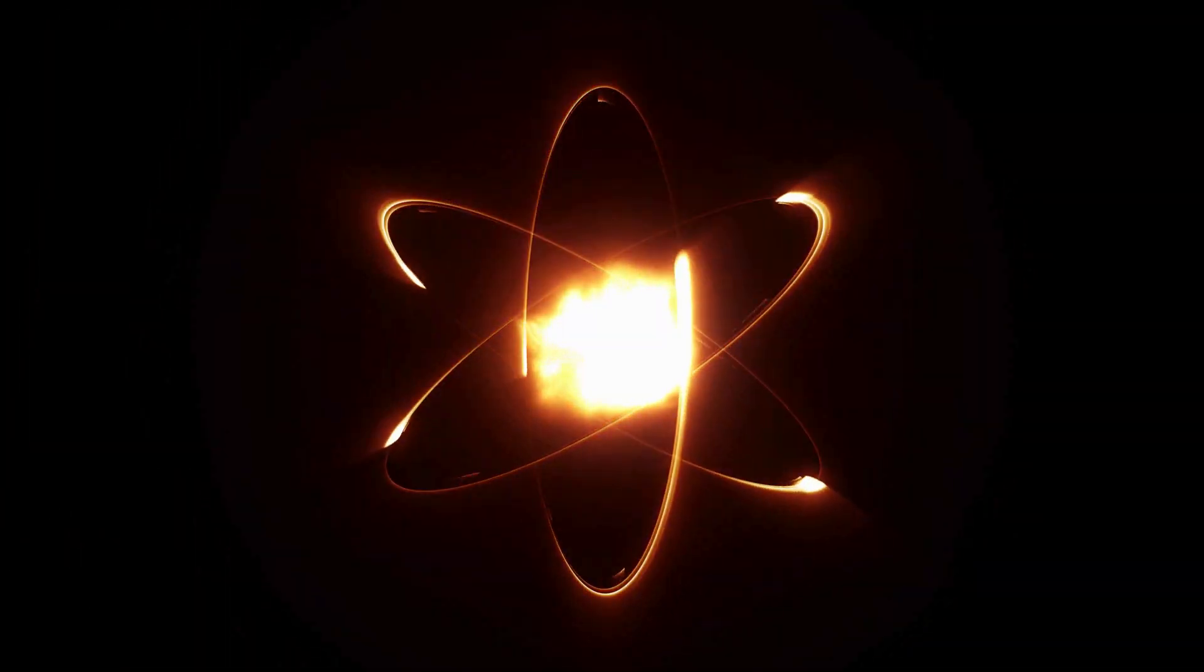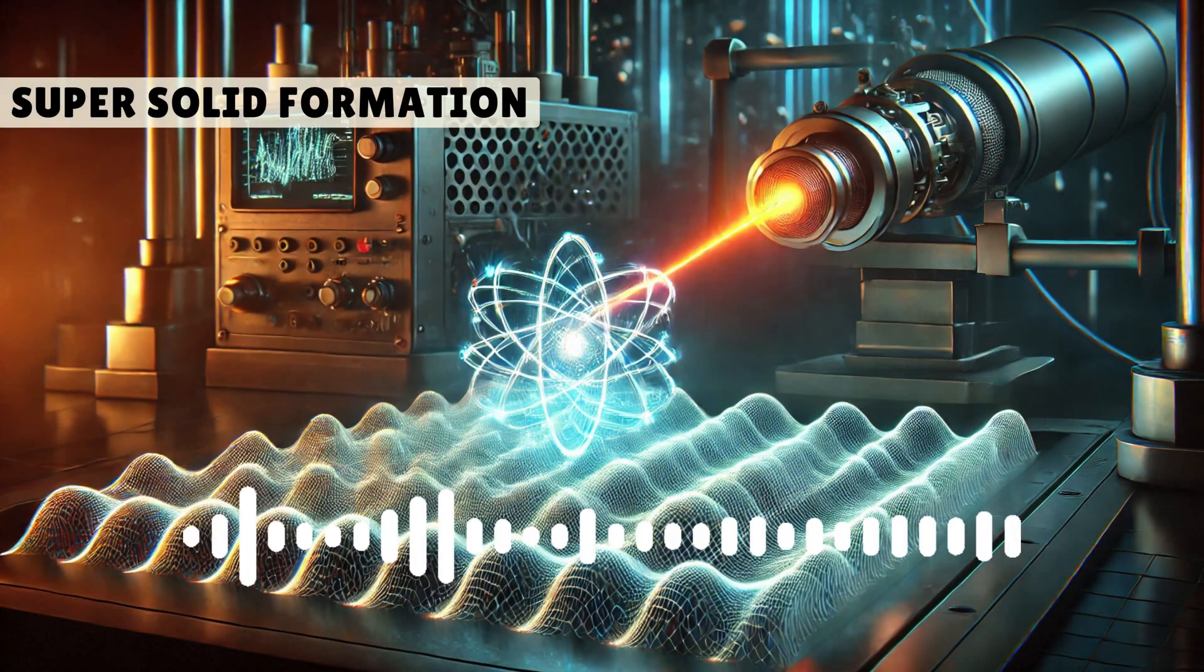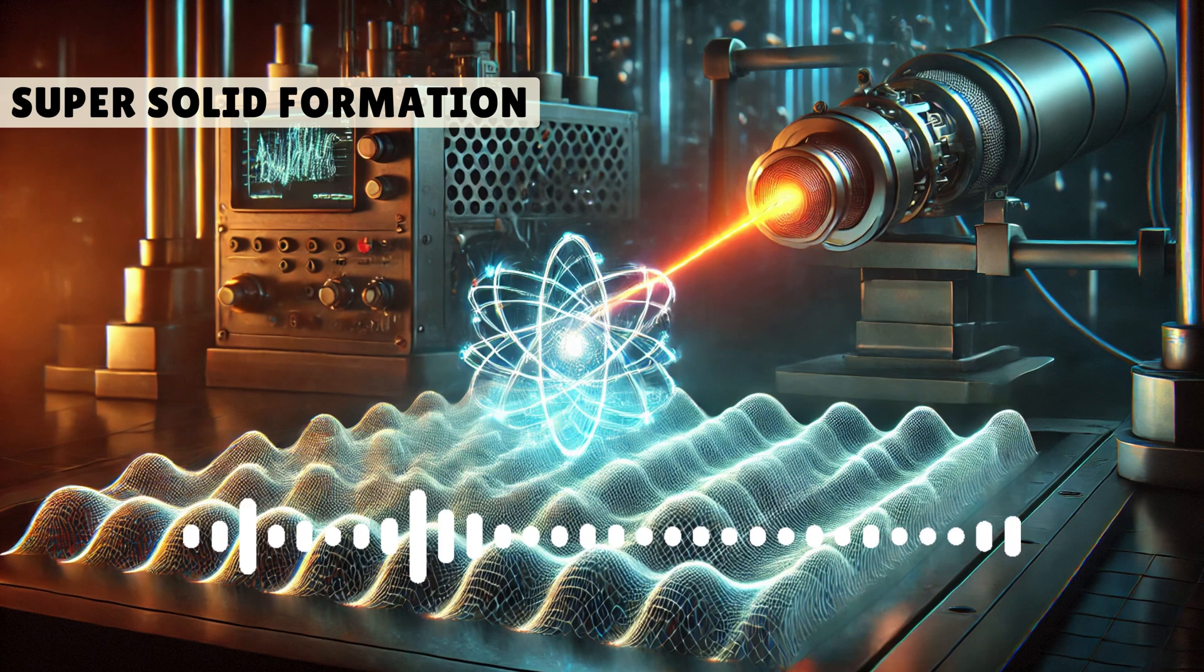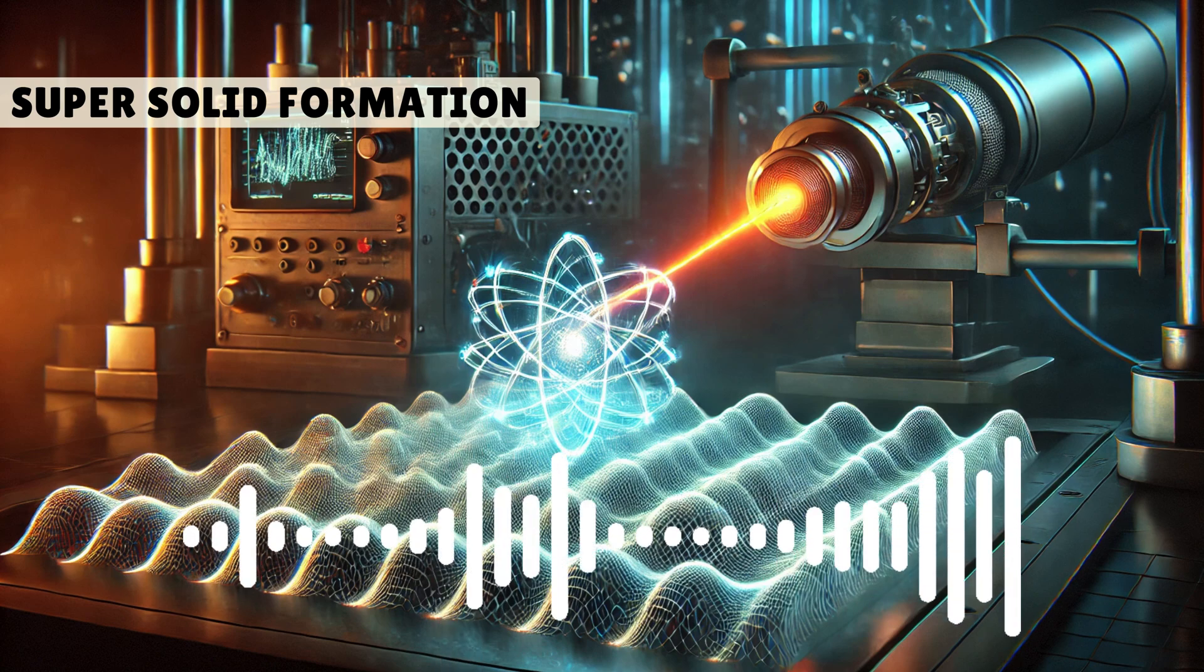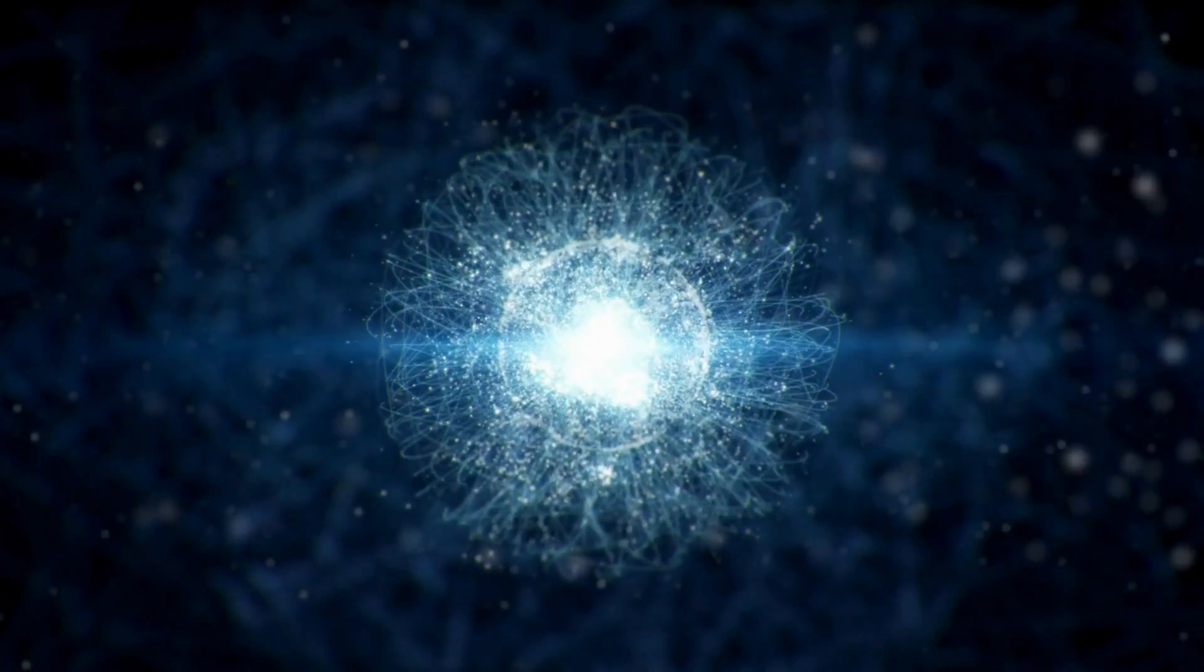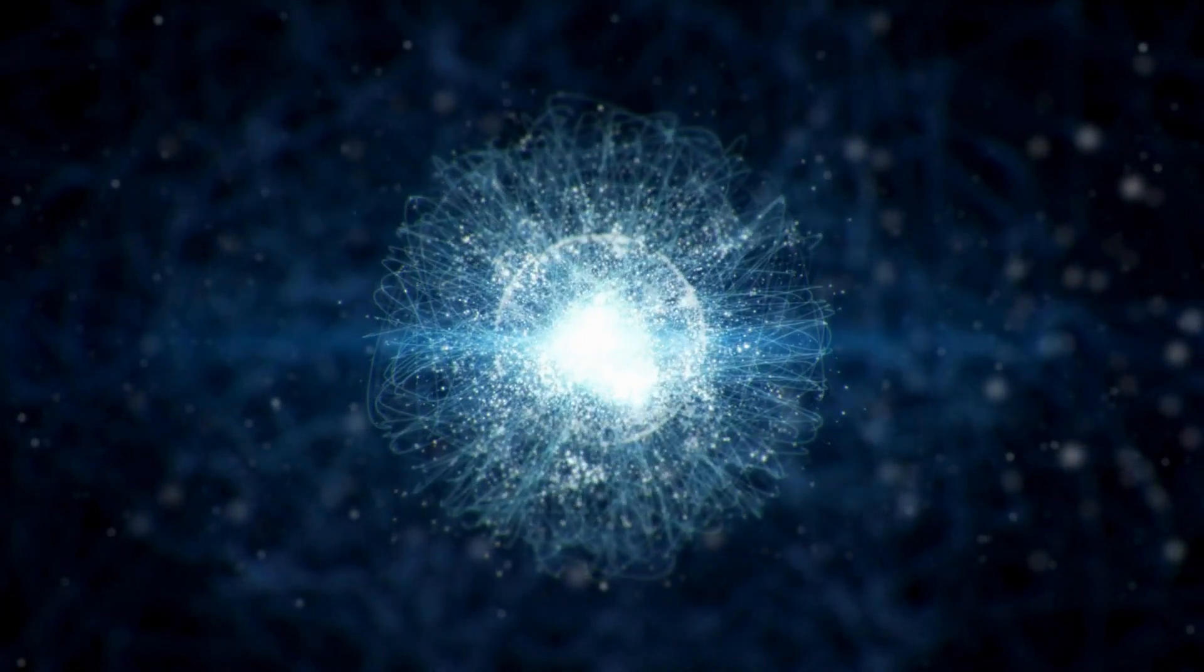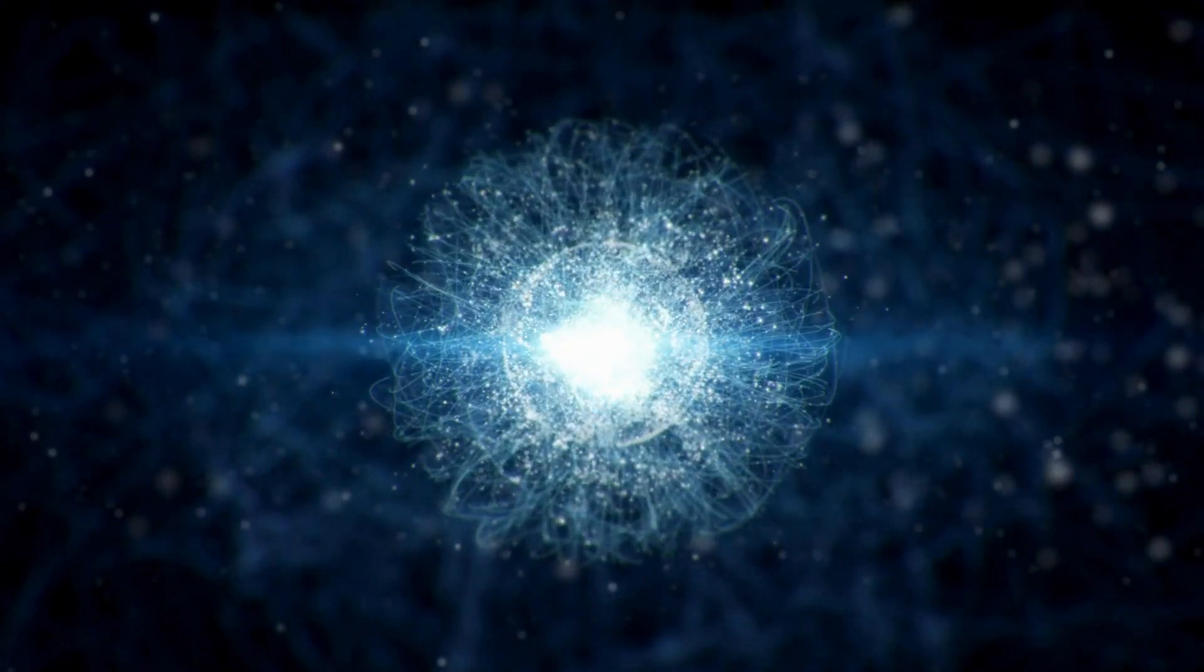So how did they actually do it? How do you make a super solid out of light? They took laser light, regular laser light, and shone it onto a special semiconductor material called gallium arsenide. But here's the catch - this material was etched with these tiny, microscopic ridges. And when the light interacted with the semiconductor at those ridges, it created these quasi-particles called polaritons.